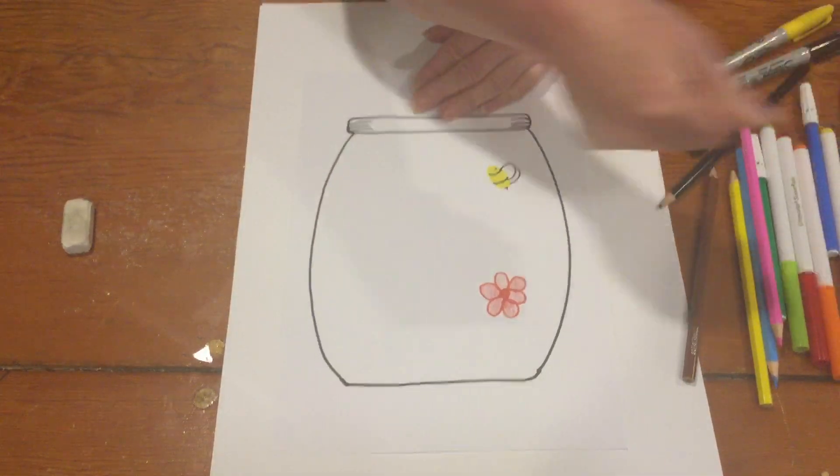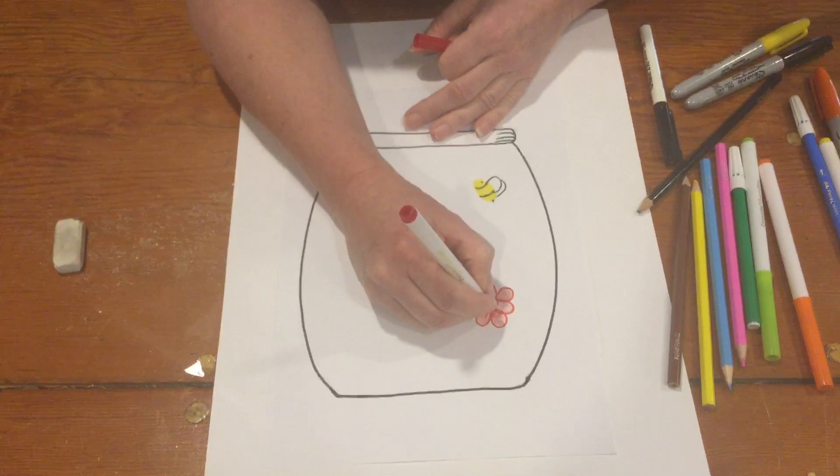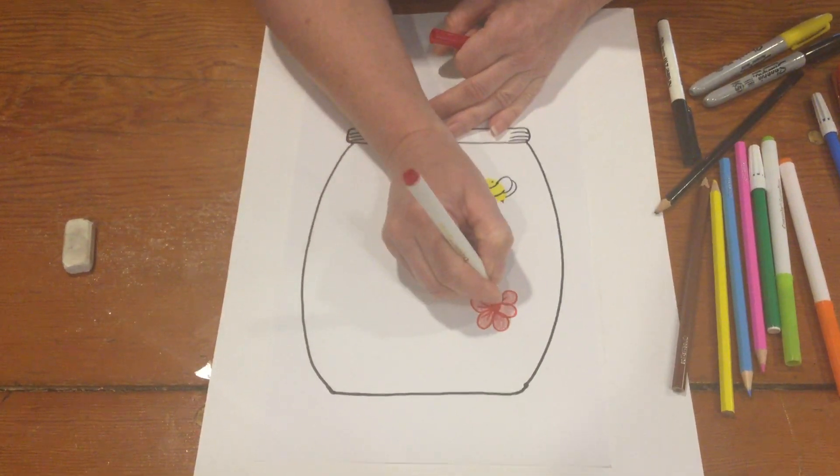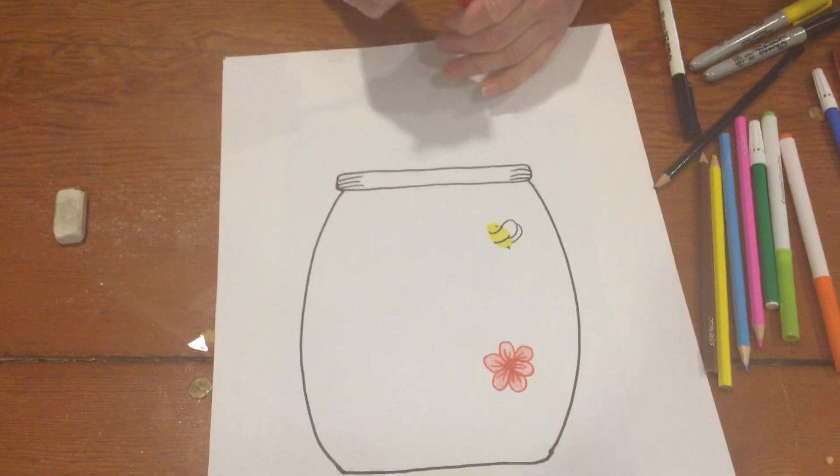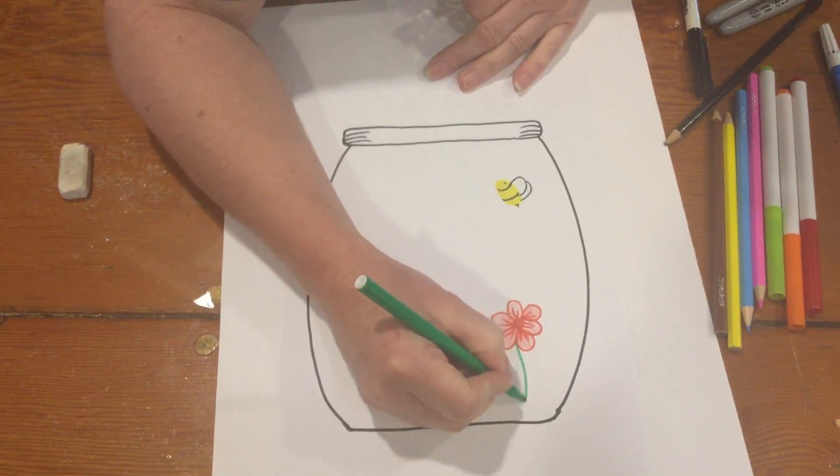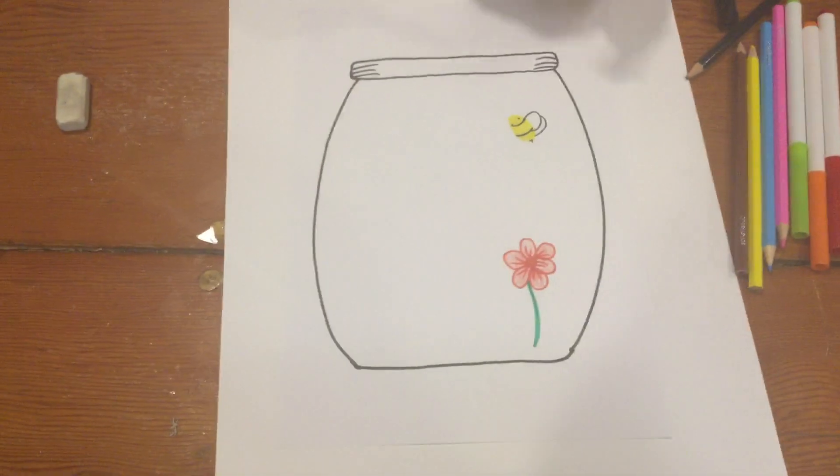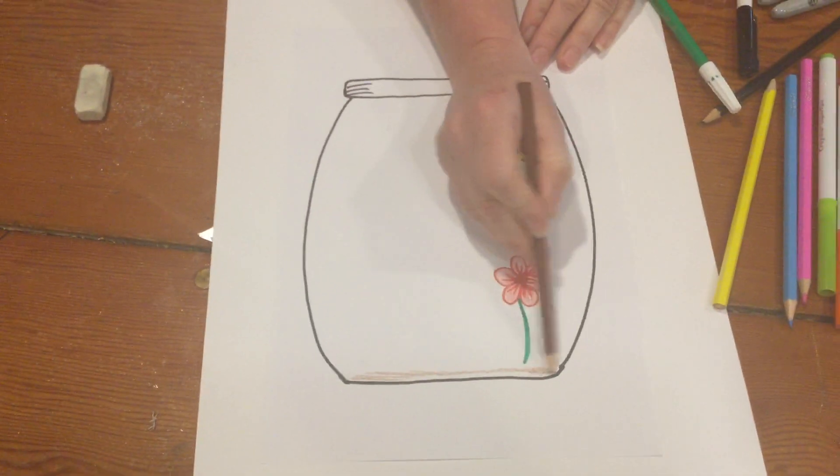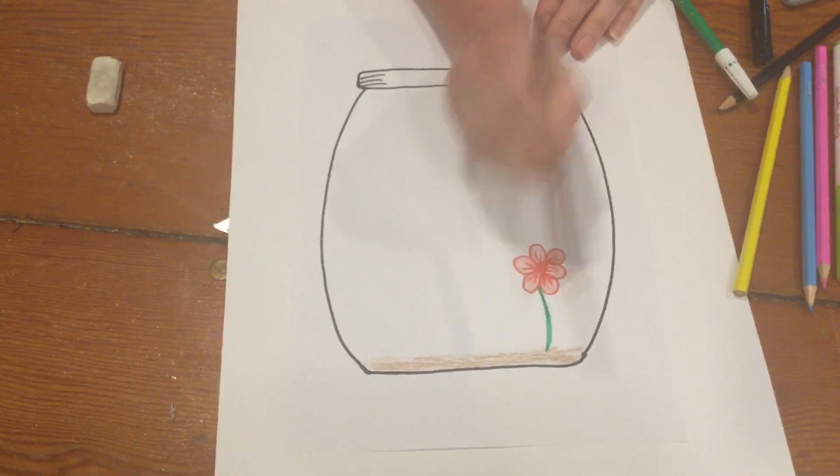I'll show you what I mean when we can add some detail to our flower using a texter. We can add some lines in our flower just to make it a little bit more realistic looking. And then our stem. In the bottom of my jar I'll put a little bit of dirt in my jar that flowers are growing in.